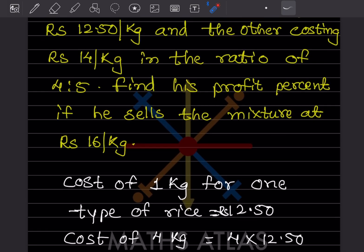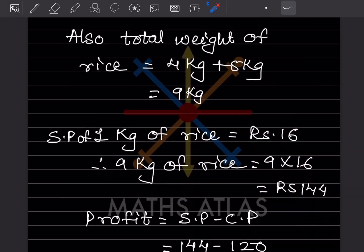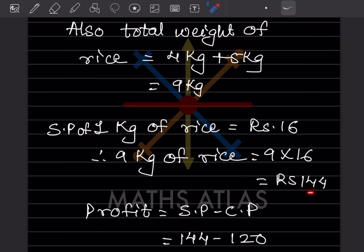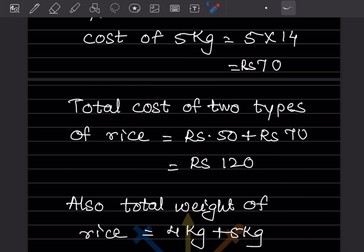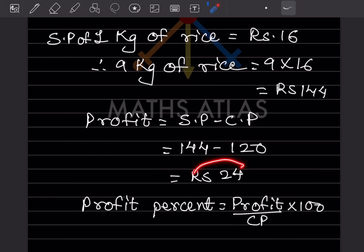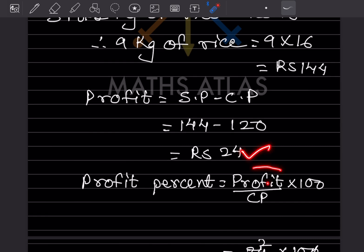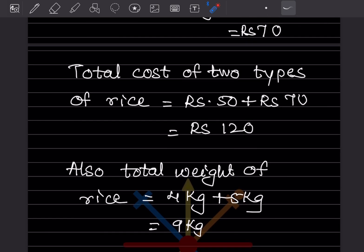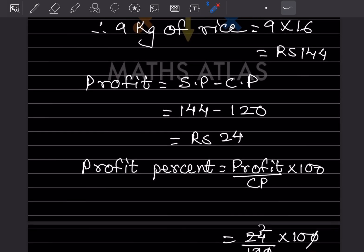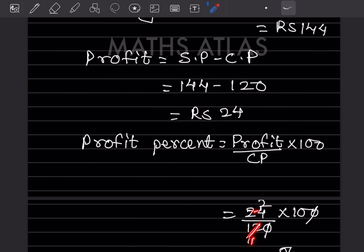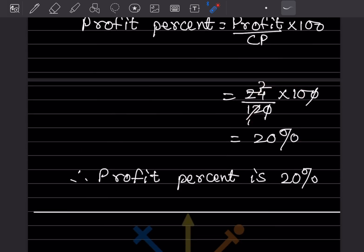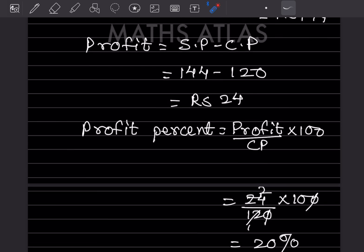We cannot find profit percent directly, so first find profit: Profit = SP − CP = 144 − 120 = ₹24. Now, Profit% = (Profit ÷ CP) × 100 = (24 ÷ 120) × 100. Simplifying, 24 and 120 cancel to give 20%. So the profit percent is 20%.